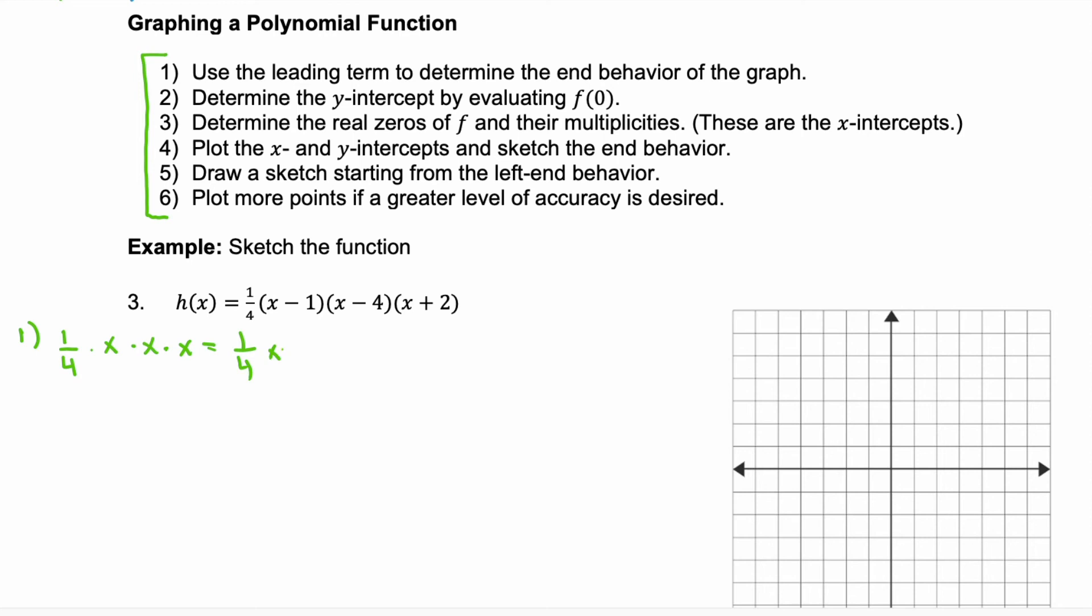1/4 times x times x times x. So, we have (1/4)x³. Our leading coefficient is positive and our degree is odd. So, we have a positive odd. If you go back to that chart on the first page, positive odd, the left is going down and the right is going up. Here, we're not asked to explain the end behavior. So, I'm good just leaving it like this just so I have a visual of what to expect when I get to my graph.